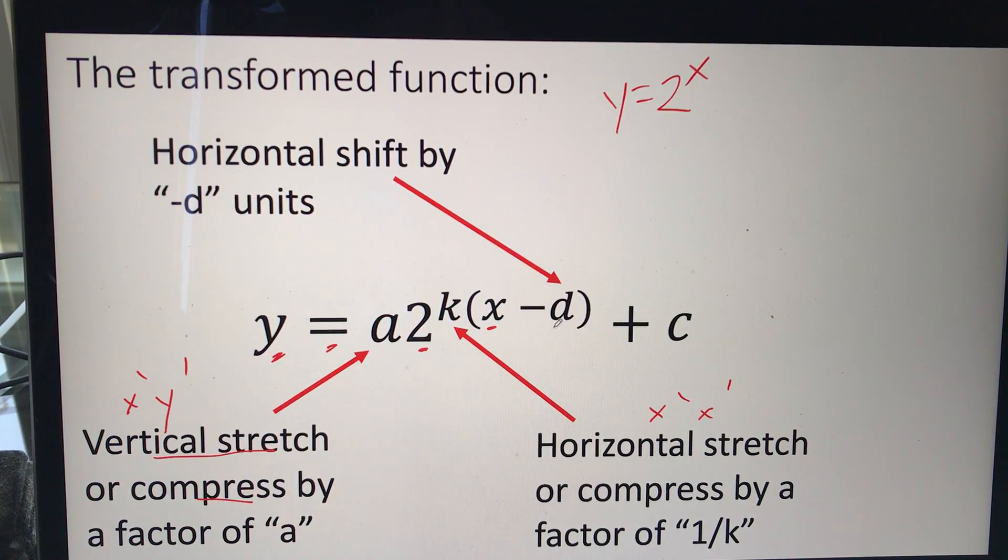This d is the horizontal shift. It's the same rule. If it's negative, you would think it would go left, but it actually goes right. So if it's negative, it moves right. And if it's positive, it moves left.